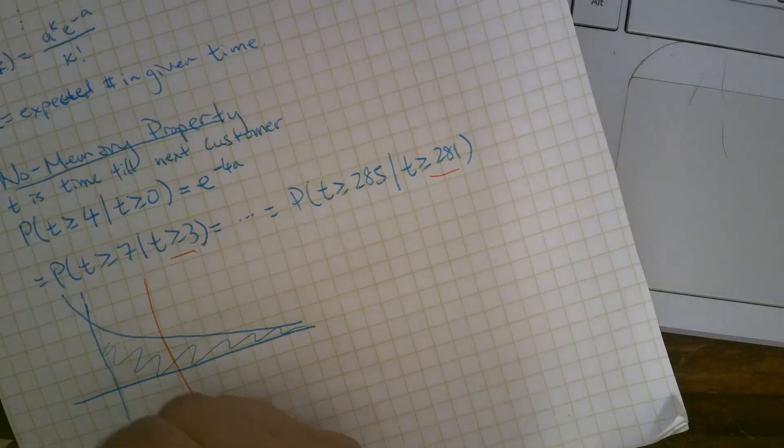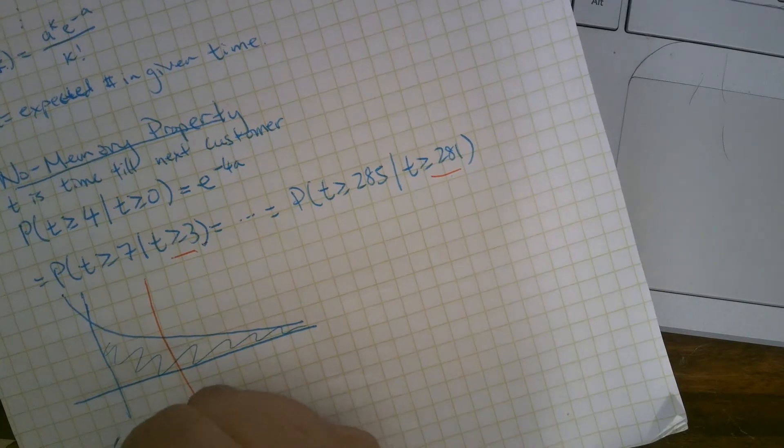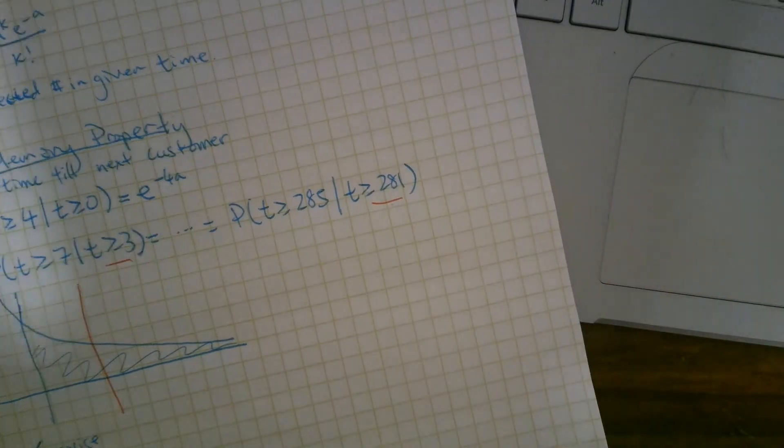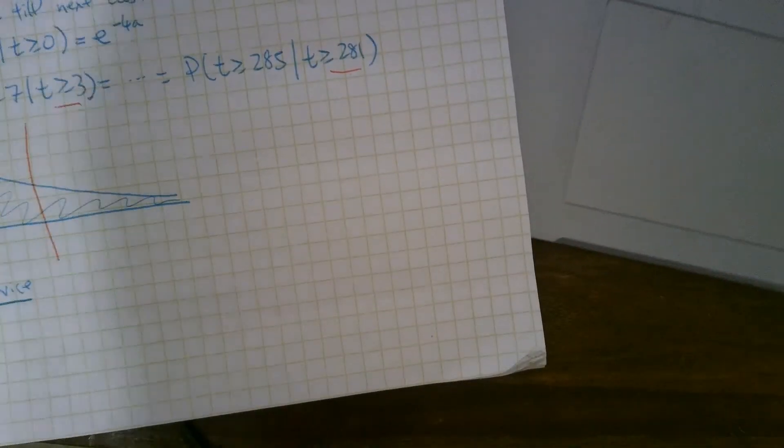But simplistically, it's realistic for customer waiting time. It's unrealistic for service. And here's an example that shows this, why can we not use the no-memory property to model service?